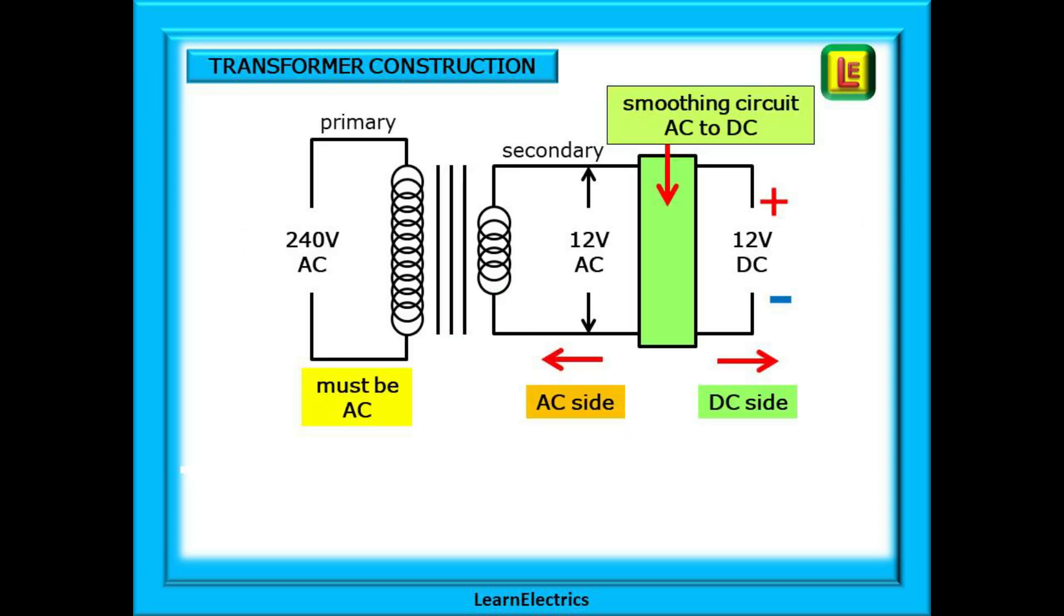The output is AC, alternating current, but some applications require DC output, direct current. So some transformer assemblies will also include a smoothing circuit. This is an arrangement of electronic components that smooths the AC waveform and makes it into a DC waveform with a positive and negative connection.